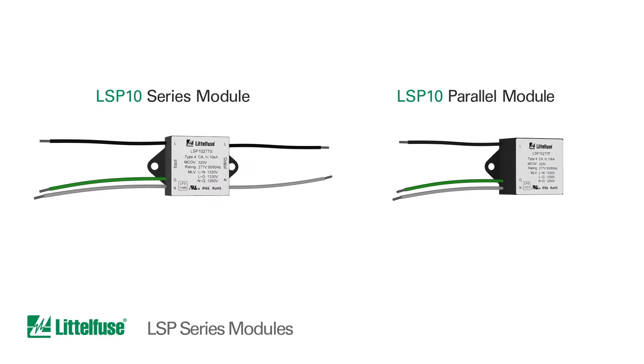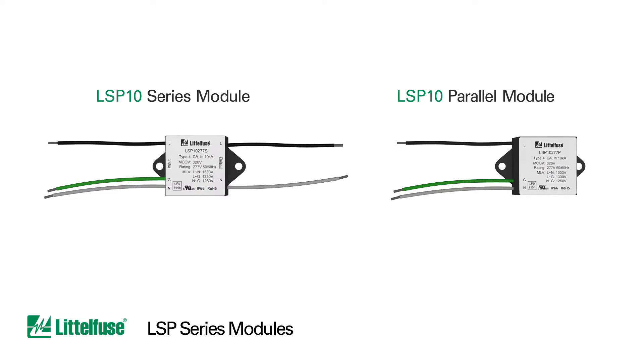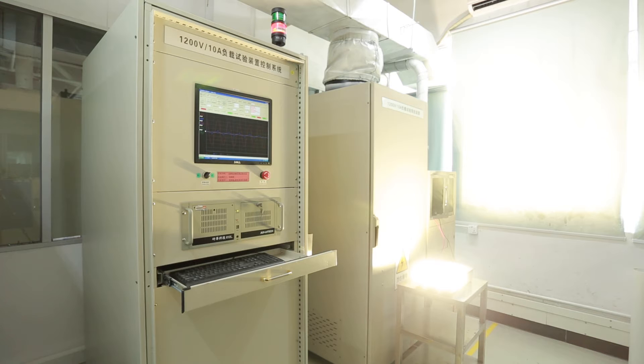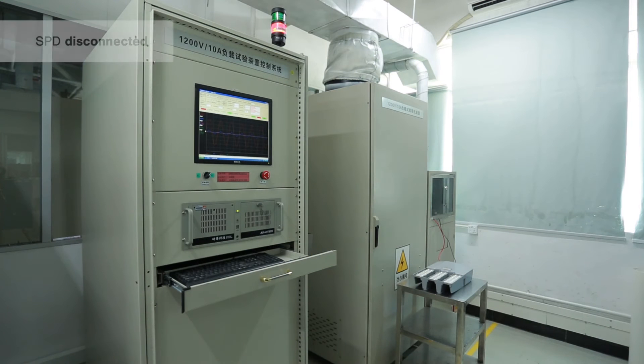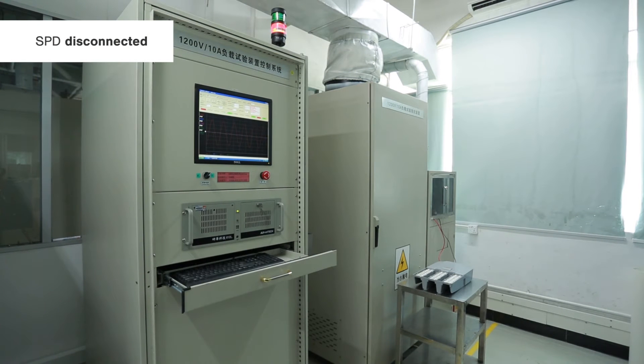Littlefuse LSP series modules are available in both series and parallel configurations. In the series configuration, the luminaire is turned off when the module reaches its end of life, providing a clear status indication and protecting the luminaire from further surges.